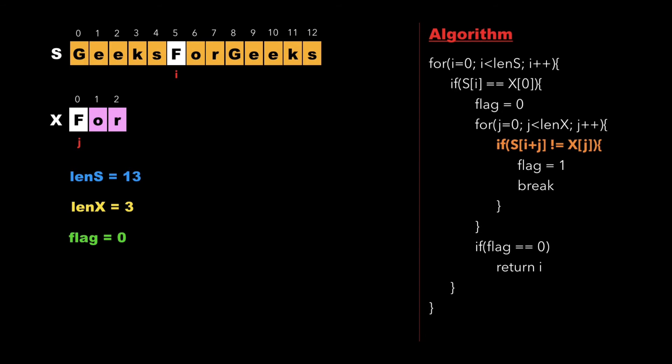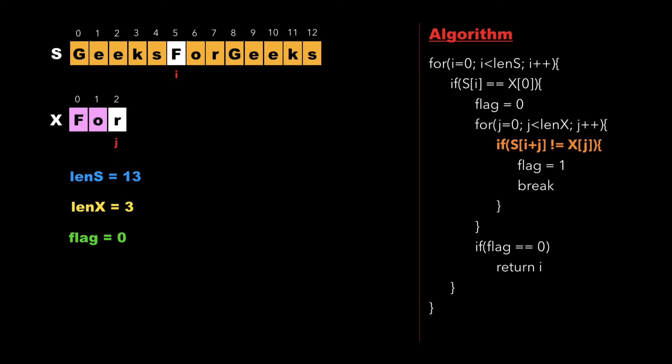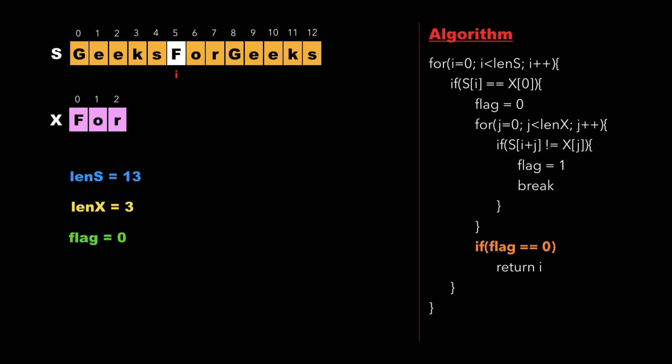We check whether s[i] equals x[0] — since both characters are equal we increment j. Then we check whether s[i+1] equals x[1]; these are also equal so we increment j again. We check s[i+2] against x[2]; again equal, so j is incremented. Now j equals three, which is not less than the length of x, so we exit the inner for loop. We then check whether flag equals zero — since flag is still zero, we return i, giving us index five as the first occurrence of 'for'.